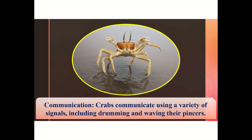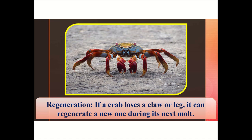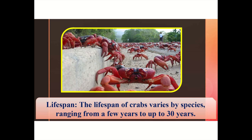Communication: crabs communicate using a variety of signals, including drumming and waving their pincers. Regeneration: if a crab loses a claw or leg, it can regenerate a new one during its next molt. Lifespan: the lifespan of crabs varies by species, ranging from a few years to up to 30 years.